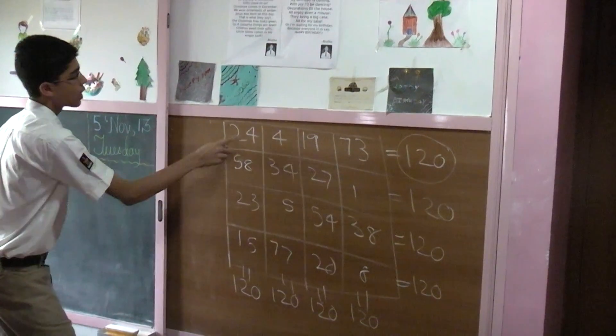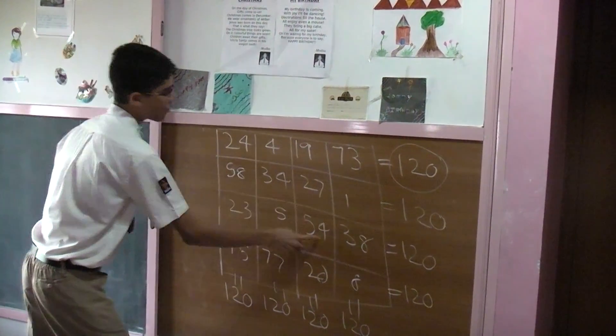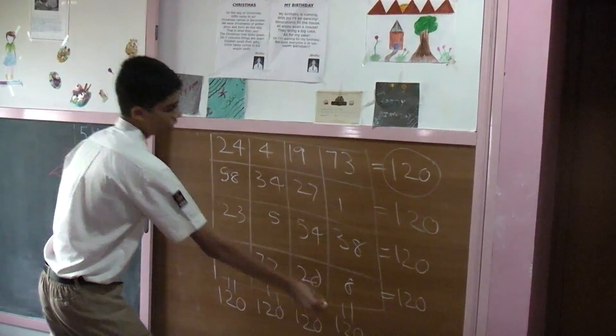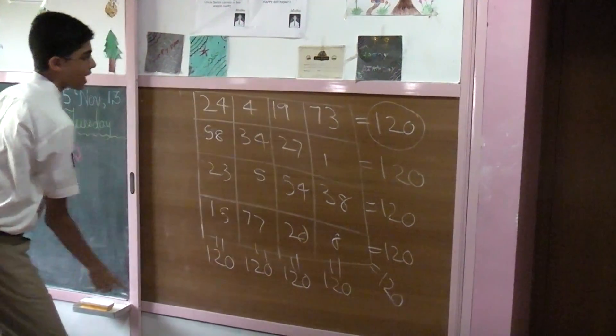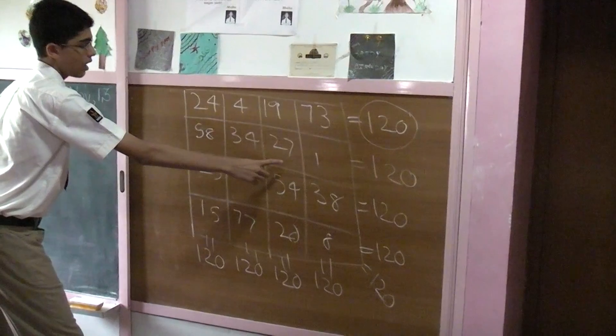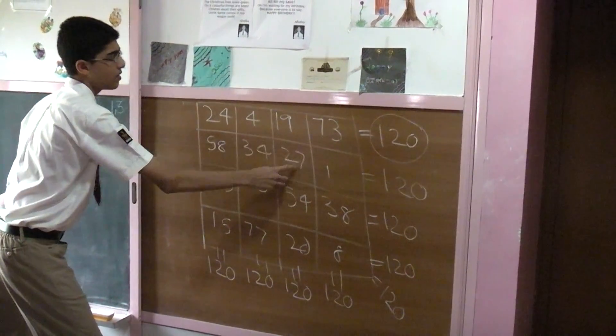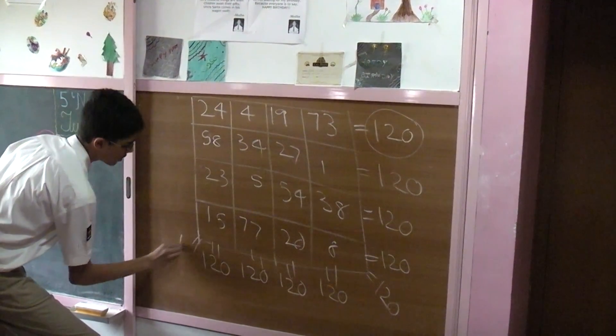You look at these two diagonals. 24 plus 34 is 58, 58 plus 54 is 112, plus 8 is also 120. And, this diagonal, you get 73, 100 and 120.